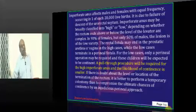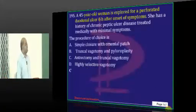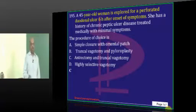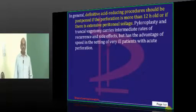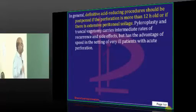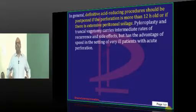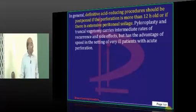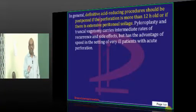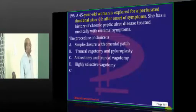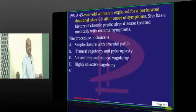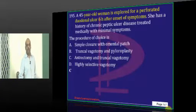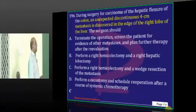A 45-year-old with perforated peptic ulcer of 6 hours duration. If it is more than 12 hours old, there is significant peritoneal soiling and we tend not to do a definitive acid-reducing procedure. Being less than 12 hours, with less soiling and existing chronic peptic ulcer disease history, we want to do antrectomy and truncal vagotomy in the same sitting.